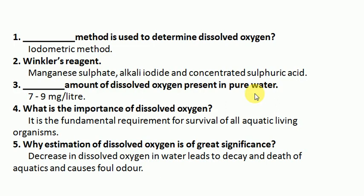Question 3: What is the amount of dissolved oxygen present in pure water? Dissolved oxygen in pure water is 7–9 mg per liter.